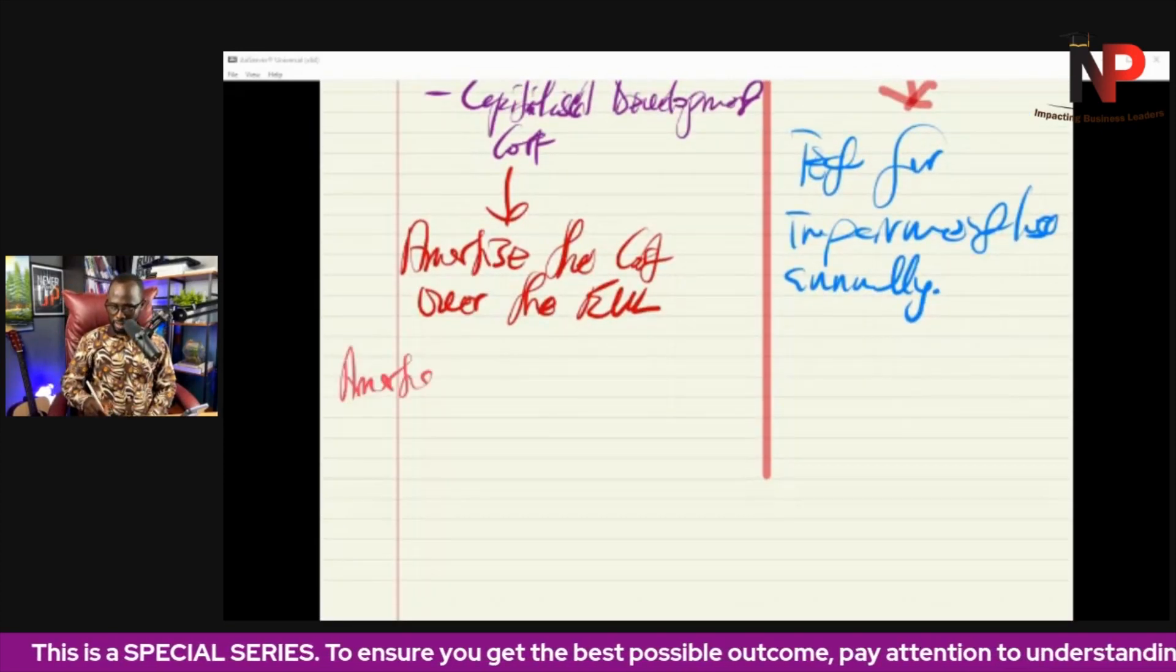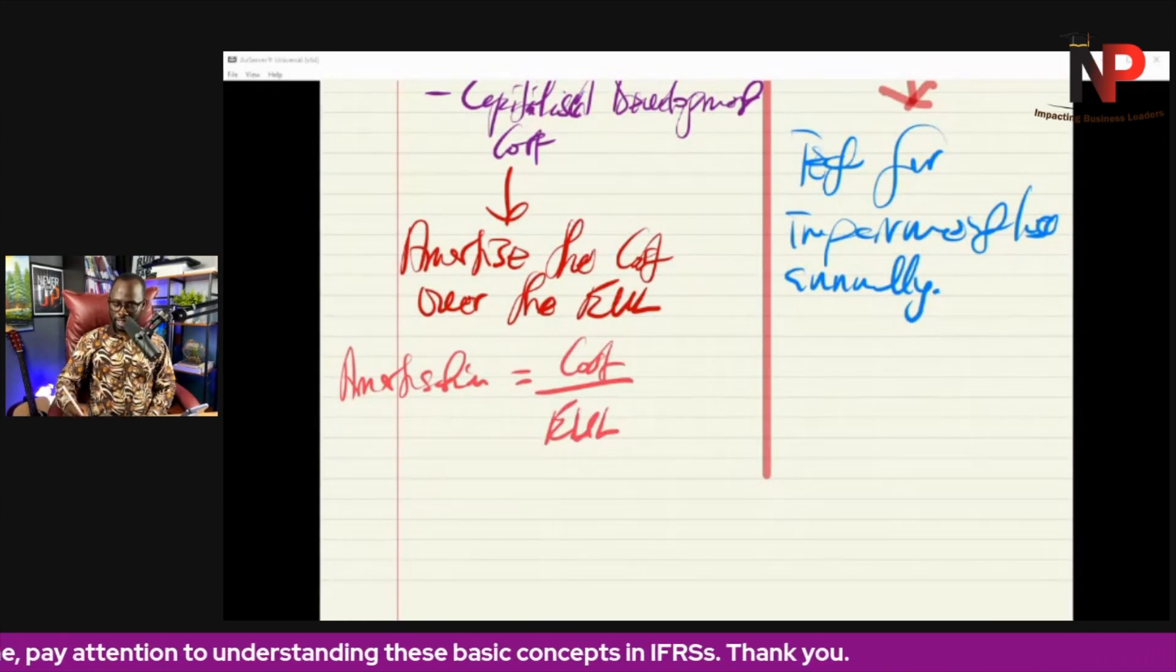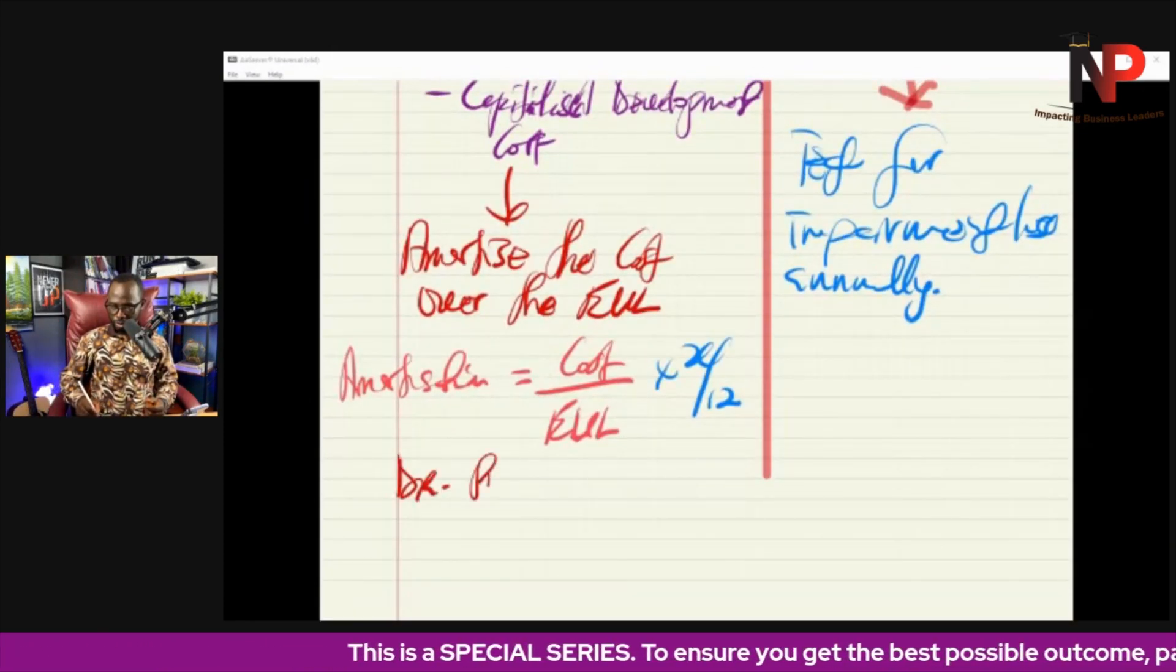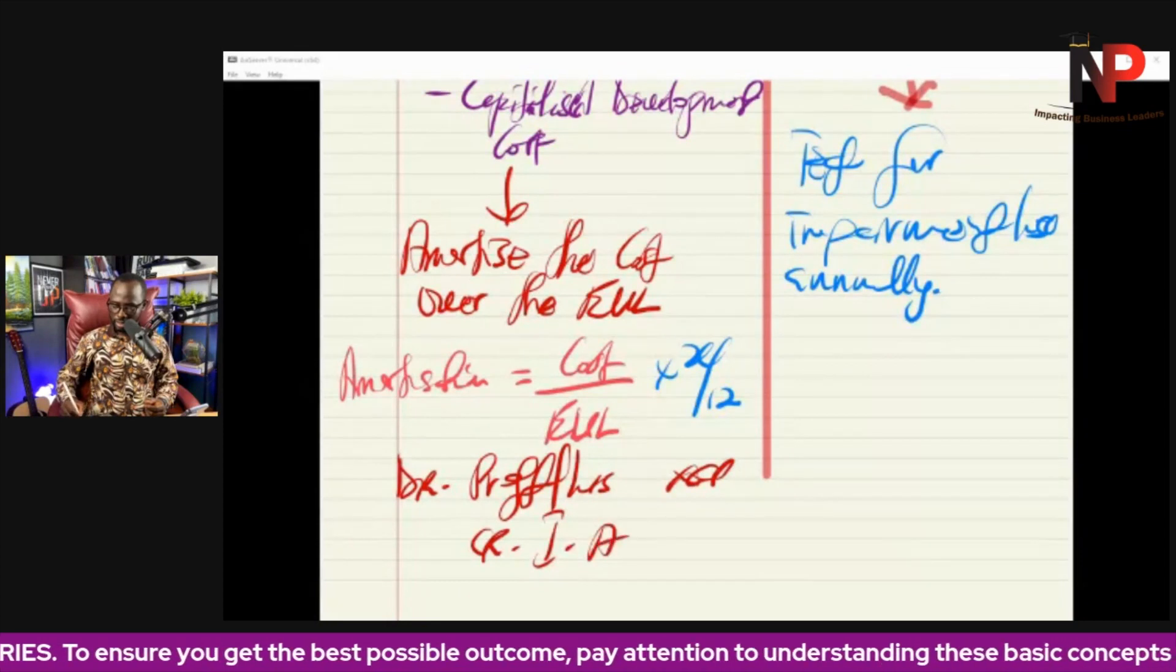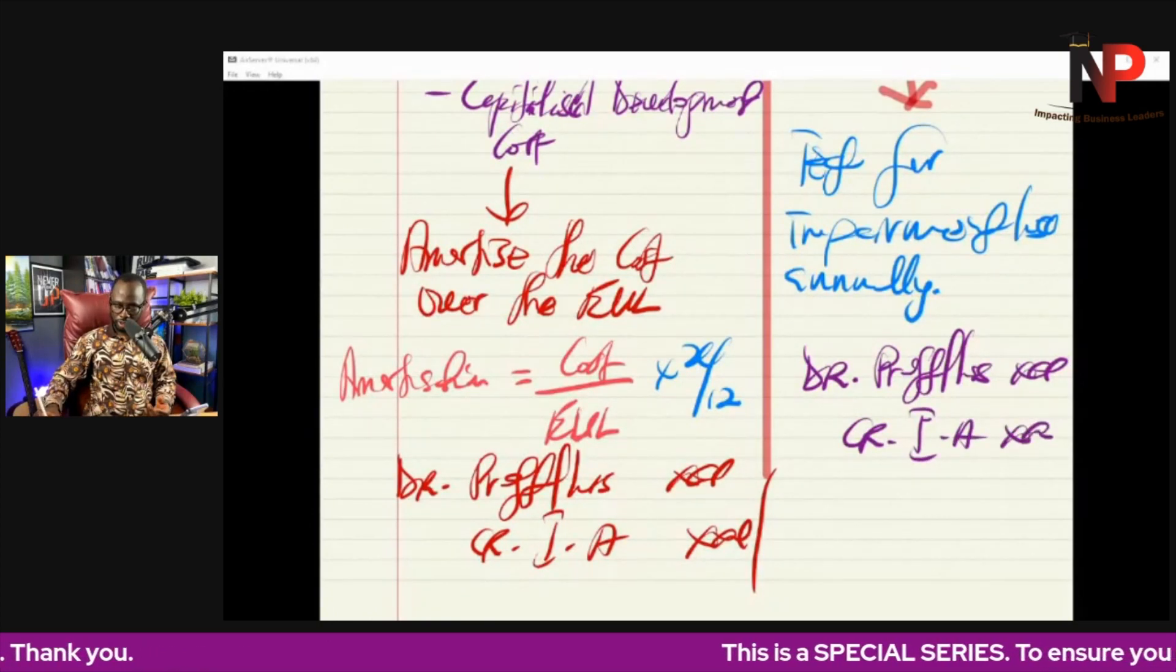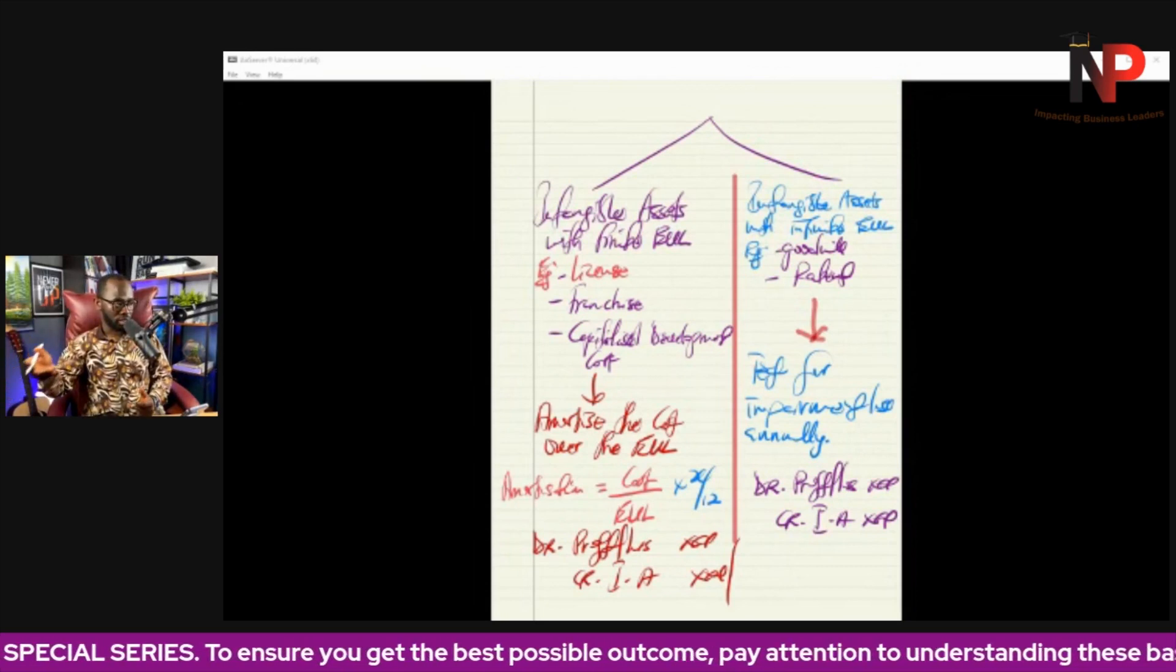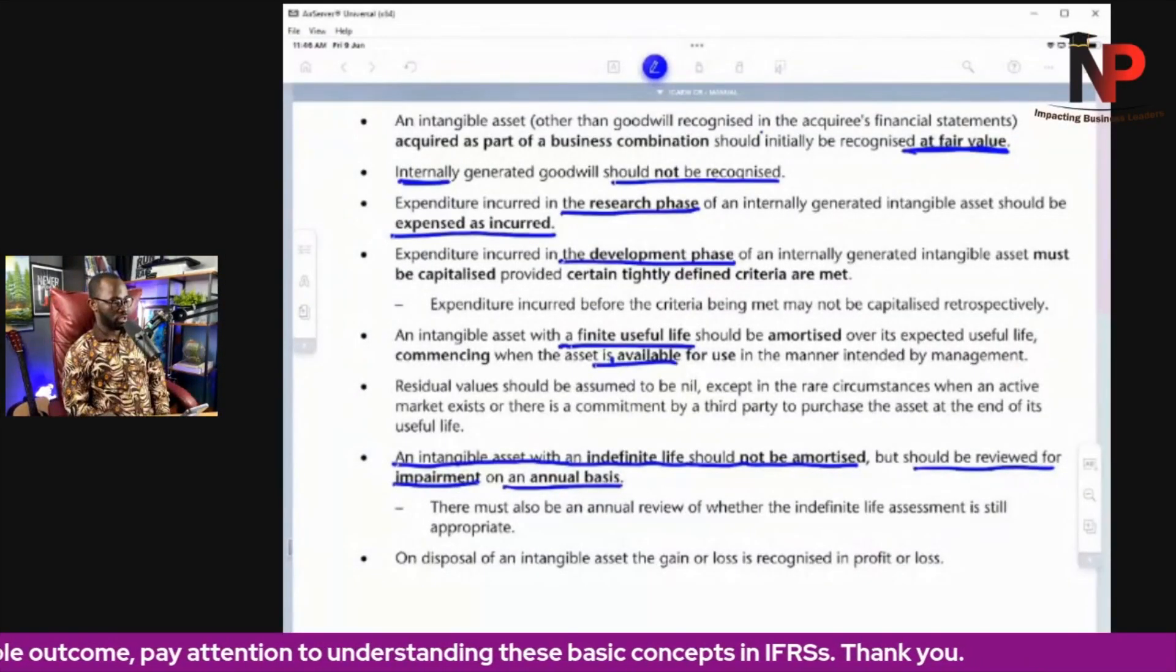So we test for impairment for intangible assets with indefinite economic useful life. But the ones with definite economic useful life we amortize. So the amortization will be the cost divided by economic useful life. If it is less than a year, then X over 12 will come in. And general entry is very simple. You debit your profit or loss because amortization is an expense. Then you credit the intangible assets as well. If we test for impairment and the asset has suffered an impairment, still debit profit or loss because impairment is an expense. Then we credit the intangible asset in question. So that is how we account for intangible assets on subsequent measurement. It depends on whether it has a finite or an infinite economic useful life.